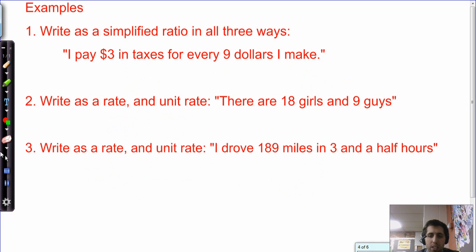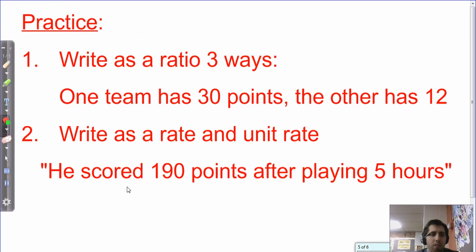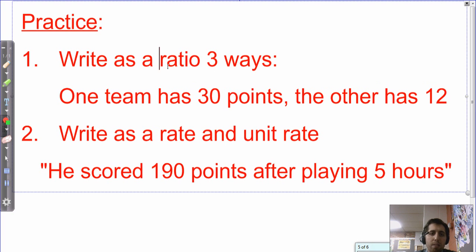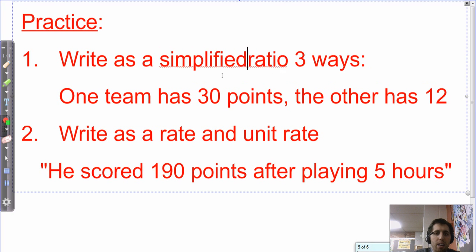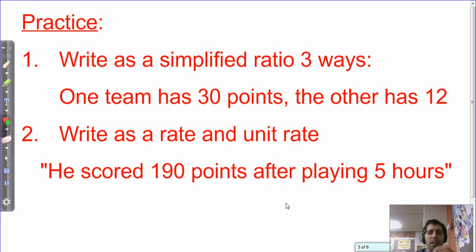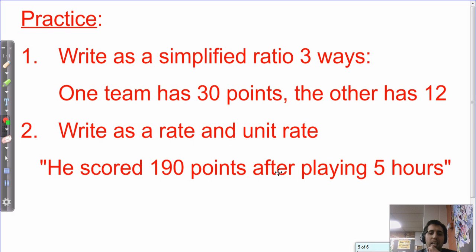I'm going to leave you with some to work on your own per usual. And here they are. First, write as a ratio in three ways. One team has 30 points. The other has 12. Also, why don't you simplify that? Write as a simplified ratio in three ways. Then write as a rate and a unit rate. He scored 190 points after playing five hours. So find that unit rate after you write it as a rate. Best of luck. See you later.